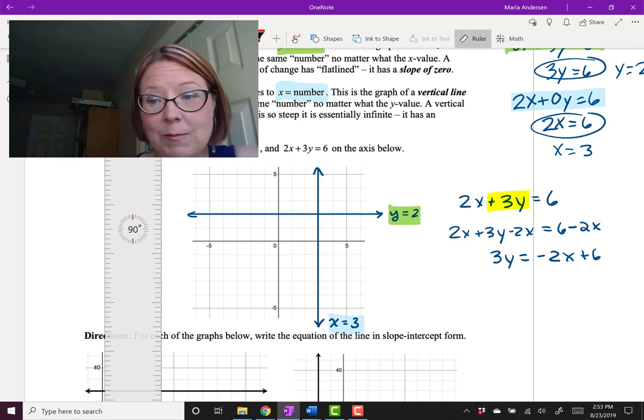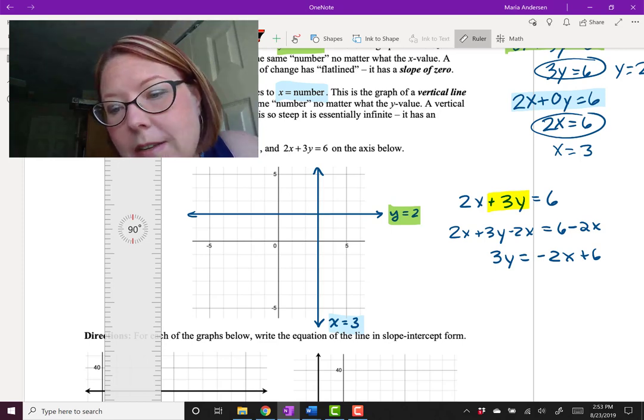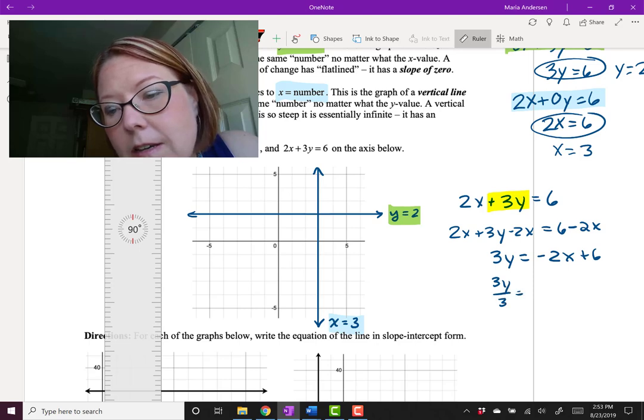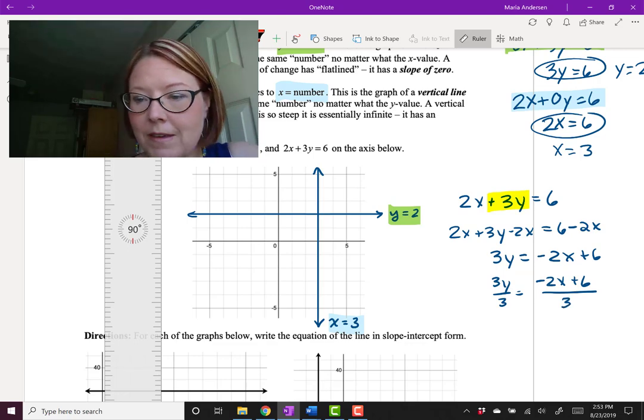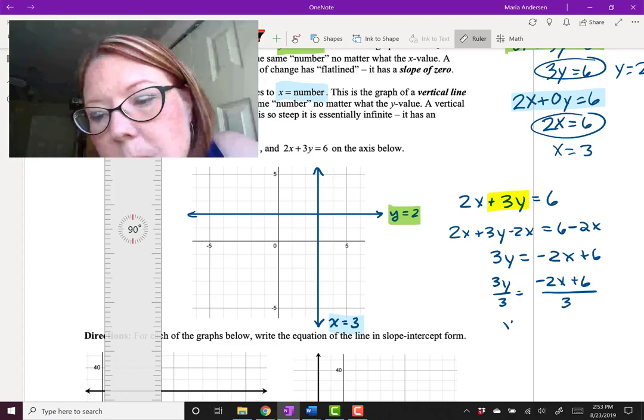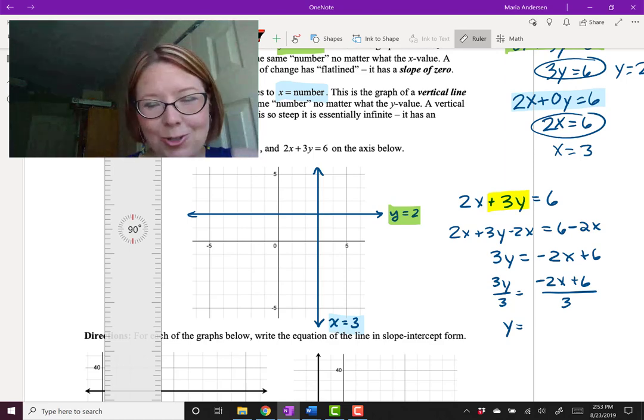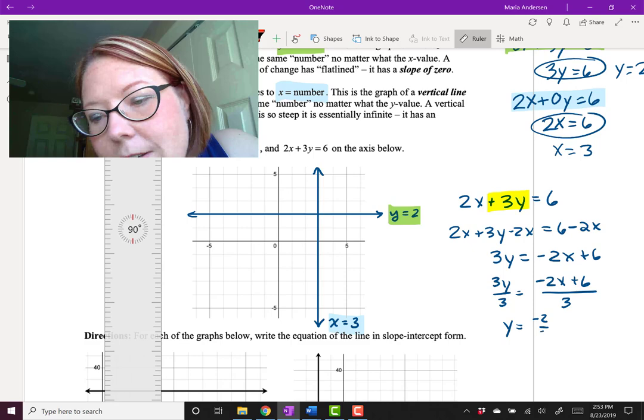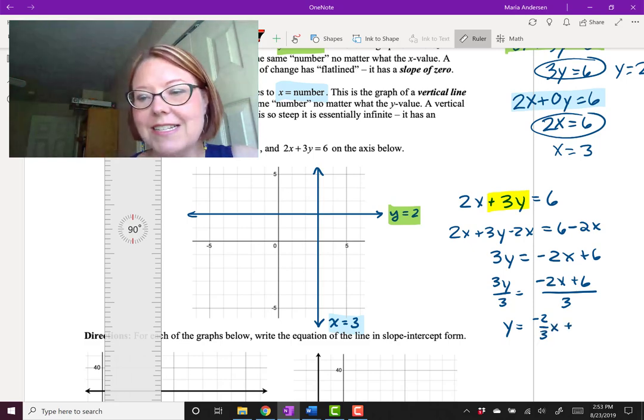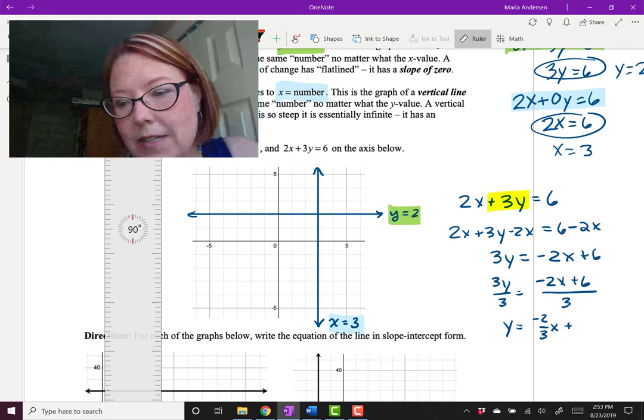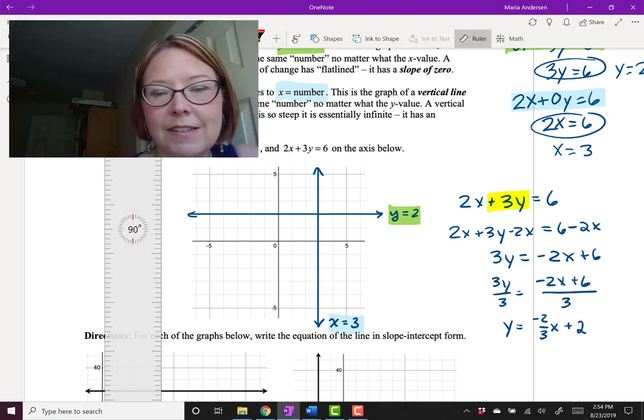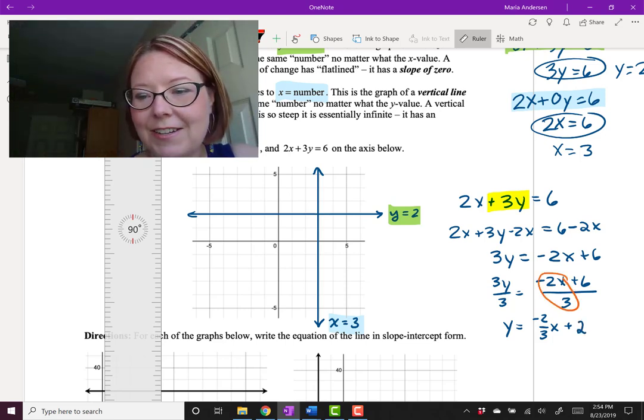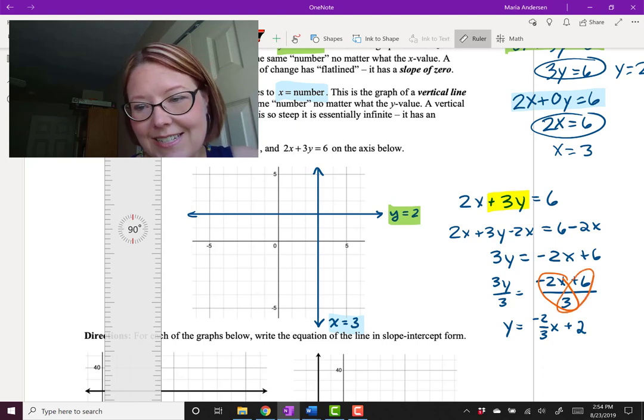That'll get us a little closer to the y equals mx plus b form. And then finally we're going to divide by 3. So we'll do 3y over 3 equals negative 2x plus 6 over 3. And that leaves us with y equals, and splitting this up into two fractions, we would have negative 2 thirds x plus 6 over 3, which is really 2. So we've written this as 2 fractions, negative 2x over 3 and 6 over 3 to get the 2.